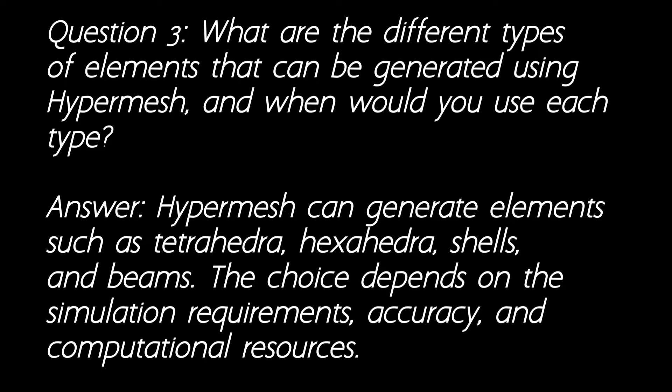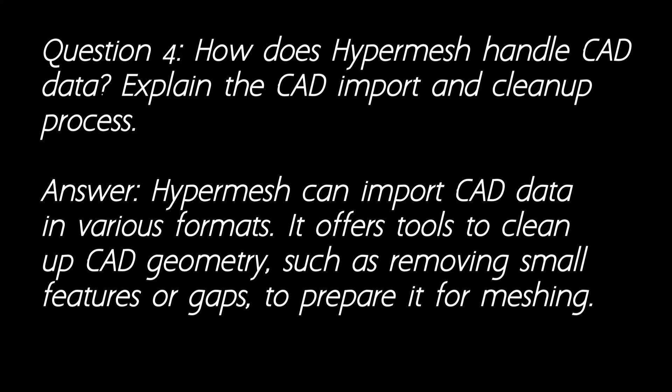Question 3: What are the different types of elements that can be generated using Hypermesh, and when would you use each type? Answer: Hypermesh can generate elements such as tetrahedra, hexahedra, shells, and beams. The choice depends on the simulation requirements, accuracy, and computational resources.